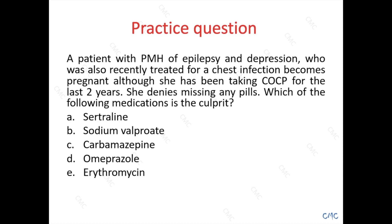Let's do an example to consolidate our knowledge. A patient with a past medical history of epilepsy and depression, who was also recently treated for a chest infection, becomes pregnant, although she has been taking the combined oral contraceptive pill for the last two years. She denies missing any pills. Which of the following medications is the culprit? This lady is saying she's compliant with her medication, so we're looking for a culprit in the form of a cytochrome P450 inducer who made the combined oral contraceptive pill crap — so we need a crap family member.